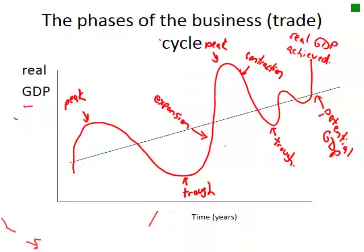When we are in the upward phase and our output is increasing, we call that an expansion. When we are in the downward phase where output is decreasing, we refer to this as a contraction. So the squiggly line is real GDP with peaks, troughs, expansions, and contractions.